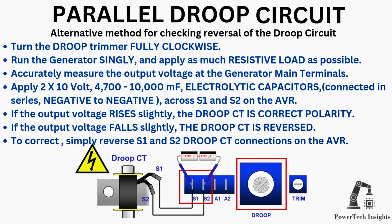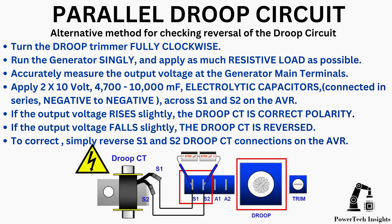Alternative method for checking reversal of the droop circuit. Turn the droop trimmer fully clockwise. Run the generator singly and apply as much resistive load as possible. Accurately measure the output voltage at the generator main terminals. Apply 2×10V, 1700 to 10,000 microfarad electrolytic capacitors connected in series, negative to negative, across S1 and S2 on the AVR. If the output voltage rises slightly, the droop CT is correct polarity. If the output voltage falls slightly, the droop CT is reversed. To correct, simply reverse the S1 and S2 droop CT connections on the AVR.